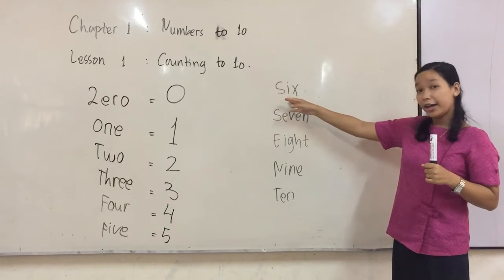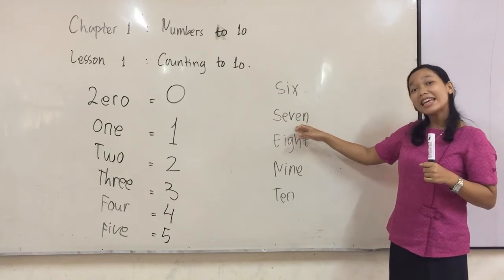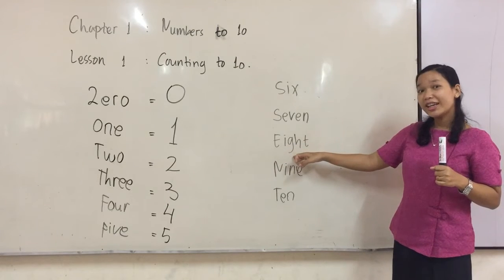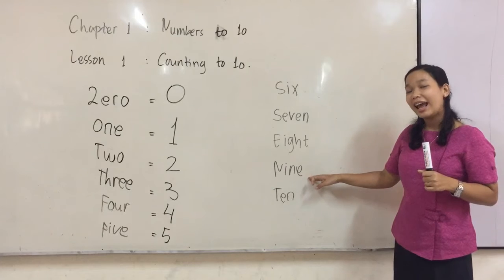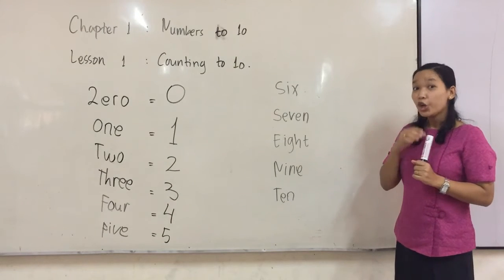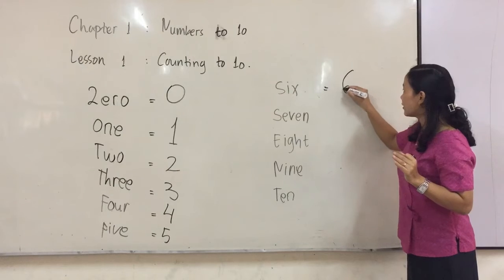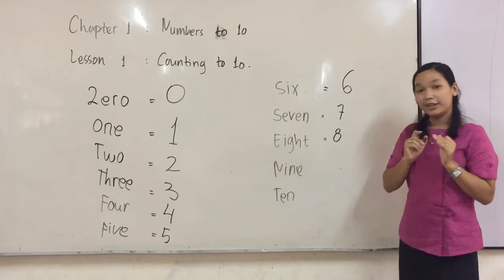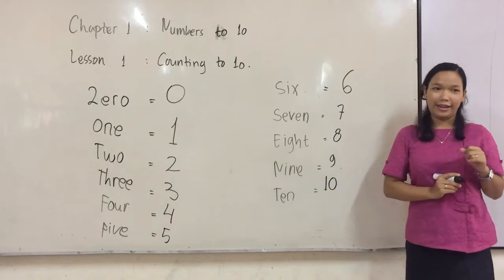Six S-I-X. Seven S-E-V-E-N. Seven. Eight E-I-G-H-T. Eight. Nine N-I-N-E. Nine. And the last one is ten T-E-N. Ten. You can follow it. Six, here is six, six. Seven, seven. Eight, eight. Nine, nine. And ten, ten.